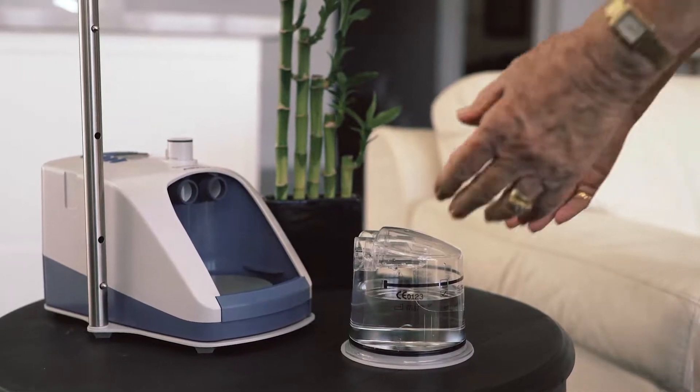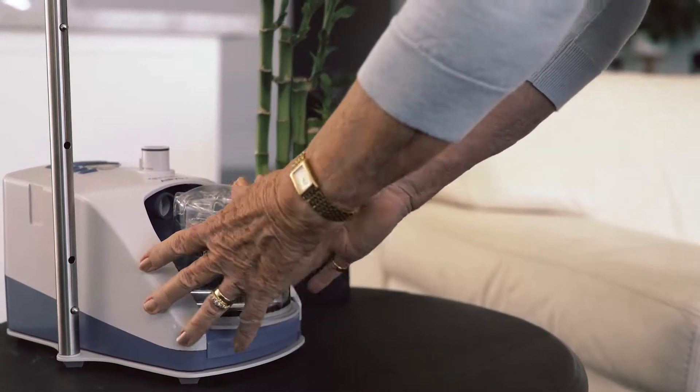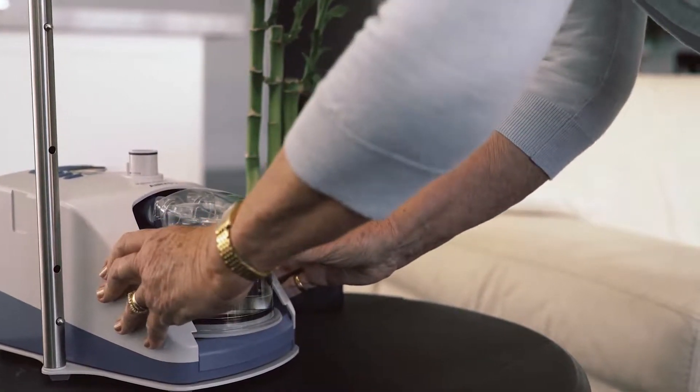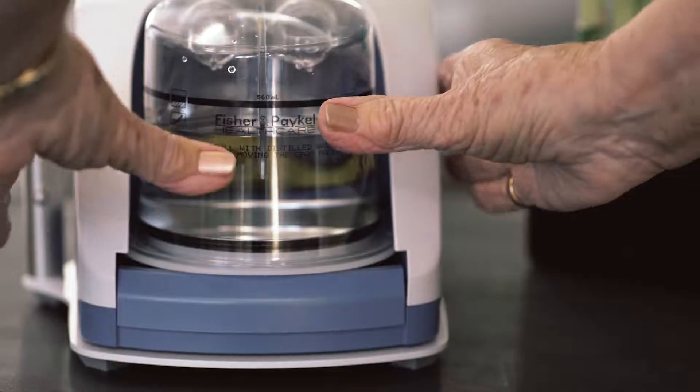Fit the water chamber to the unit by pressing down the finger guard and sliding the chamber on, carefully aligning with the blue chamber port ends. Push the chamber on firmly until the finger guard clicks into place.